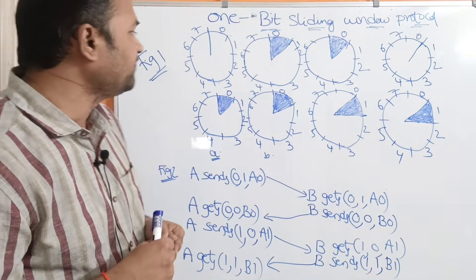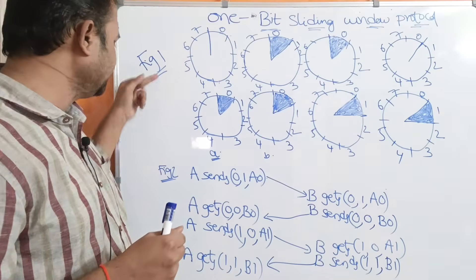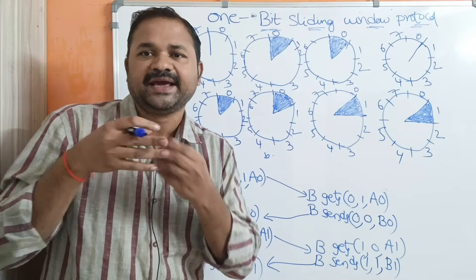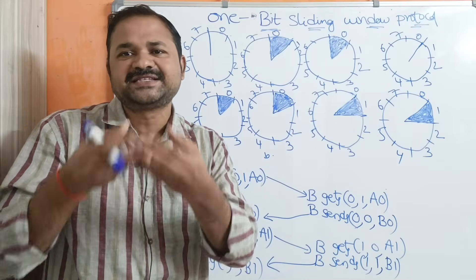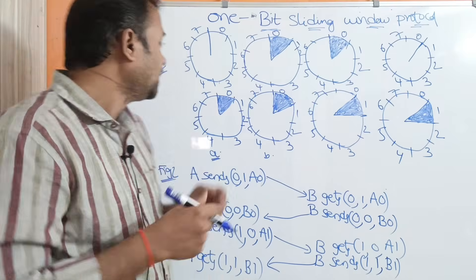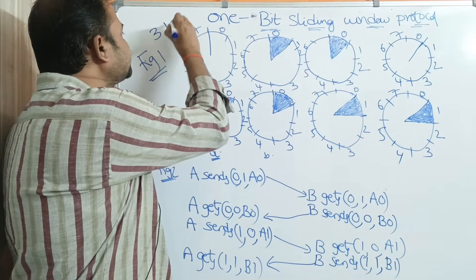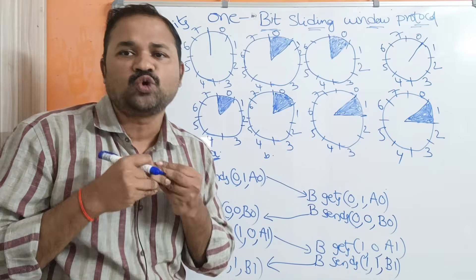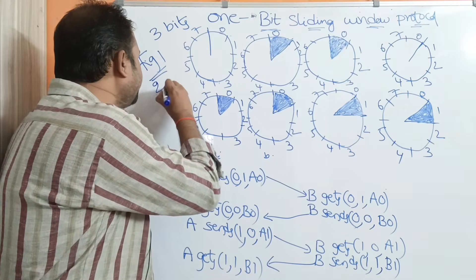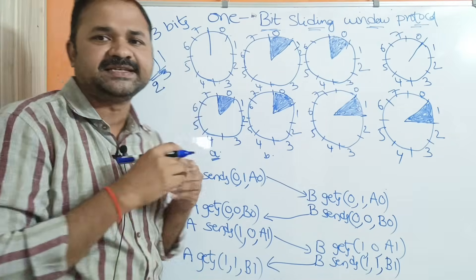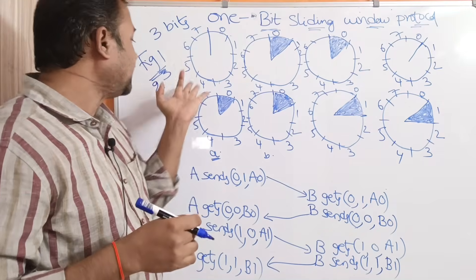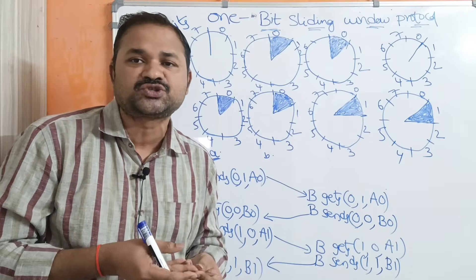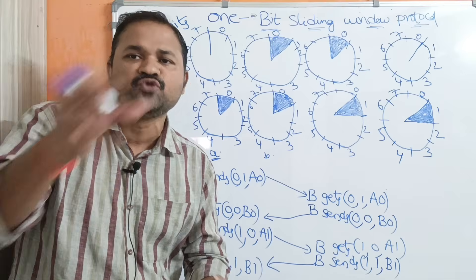Let us discuss the 1-bit sliding window protocol with the help of two diagrams. Every frame is represented with the help of a sequence number. Let us assume that the sequence number size is 3 bits, so totally we can store 2 to the power 3 frames — that is 8 sequence numbers, meaning frames 0 through 7.